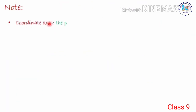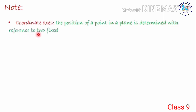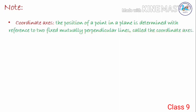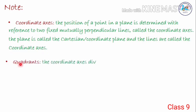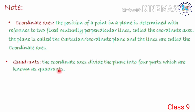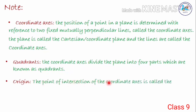Now let's conclude what we have learned so far. Coordinate axis: the position of a point in a plane is determined with reference to two fixed mutually perpendicular lines called the coordinate axis. The plane is called the Cartesian or coordinate plane and the lines are called the coordinate axis. Next, the quadrants: the coordinate axis divide the plane into four parts which are known as quadrants. Next, the origin: the point of intersection of the coordinate axis is called the origin.